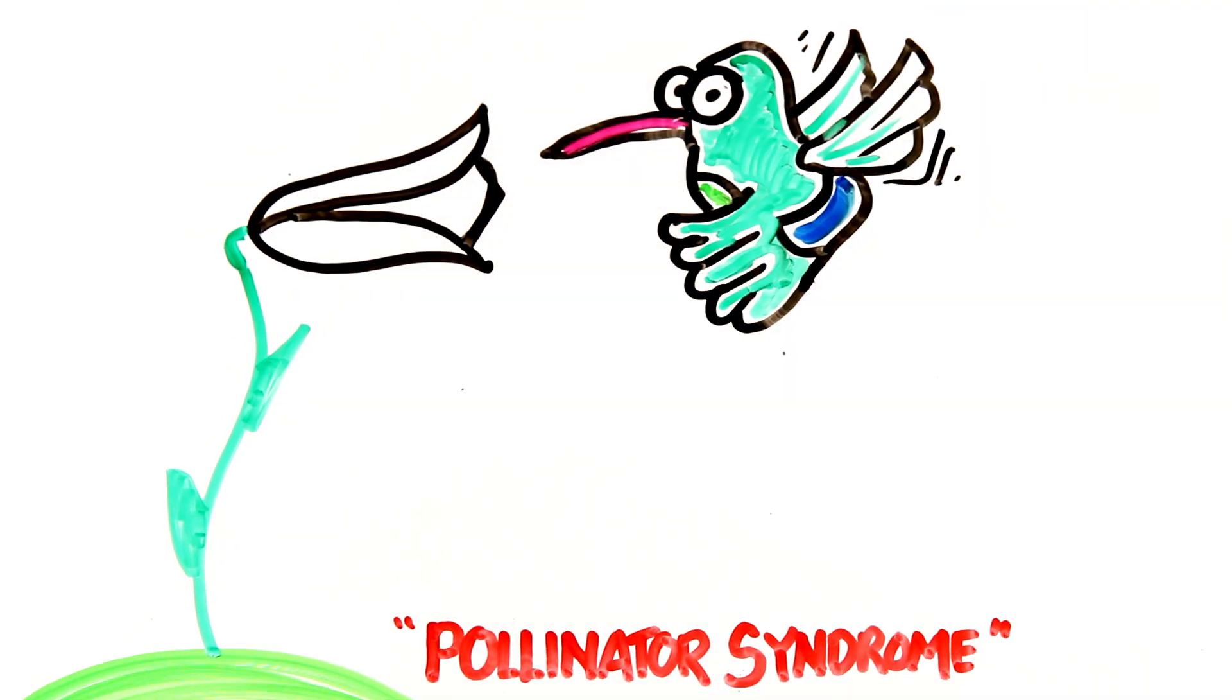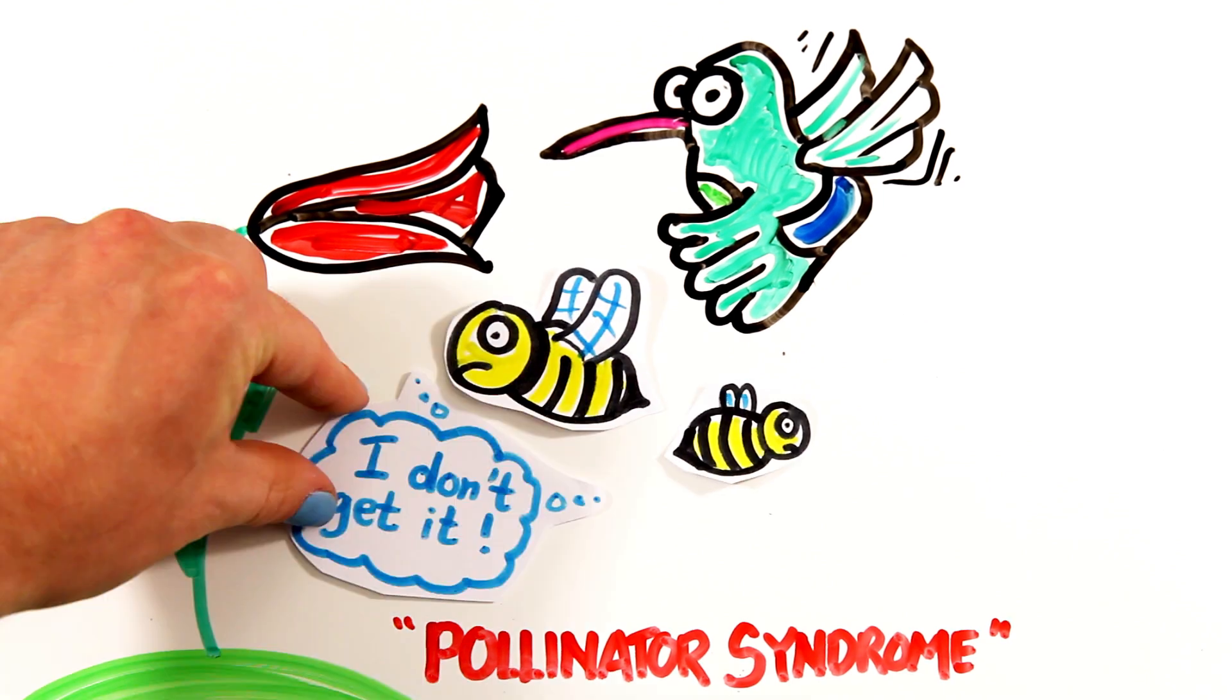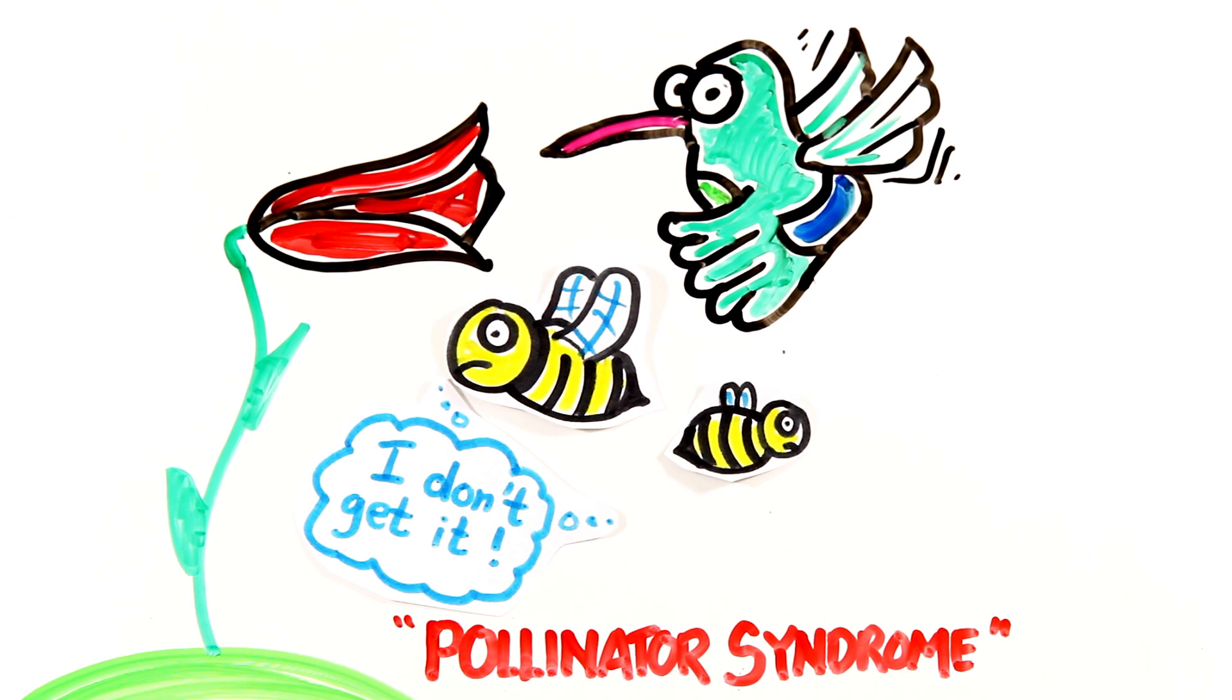Bird pollinated flowers are mostly red, potentially to discourage visits from bees, as their visual system is different than birds, making it hard for them to discriminate between red and green.